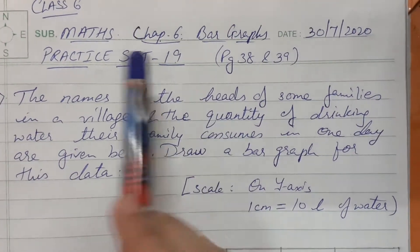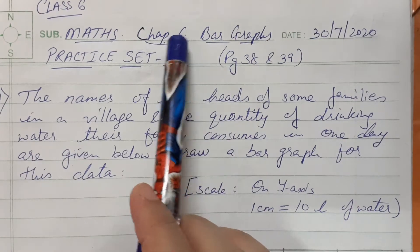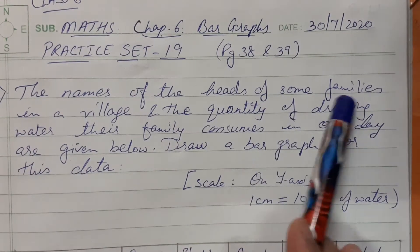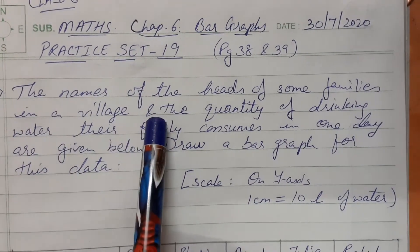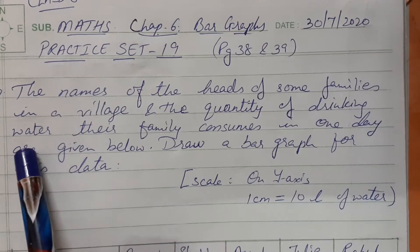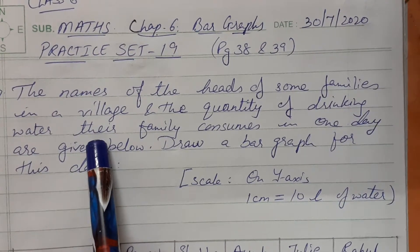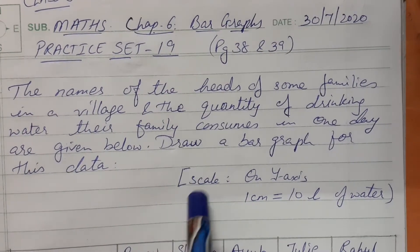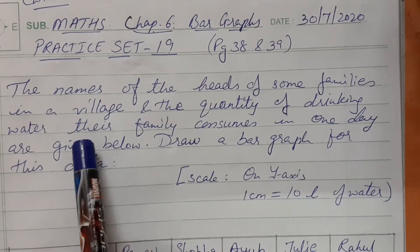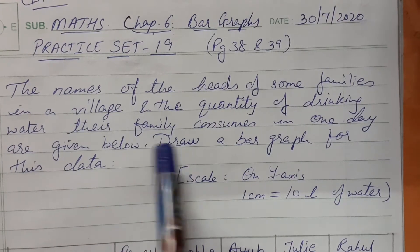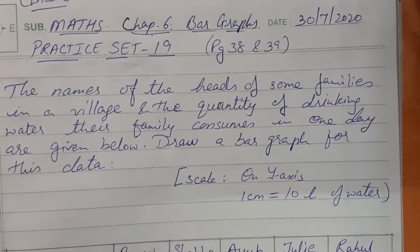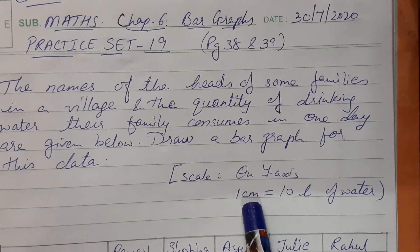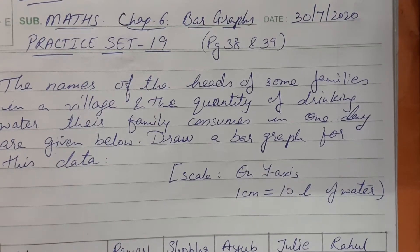Hello friends, today we will be solving Practice Set 19 in Chapter 6, Bar Graphs. The first problem gives the names of the heads of families in a village and the quantity of drinking water their family consumes in one day. The information is about families and water consumption per day. On the y-axis we have to take a scale of 1 cm equal to 10 liters of water.